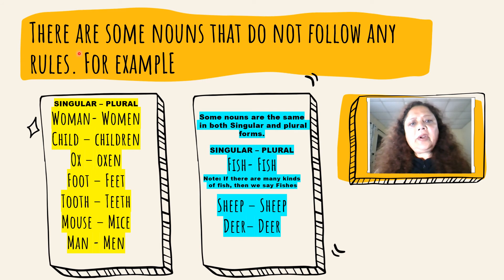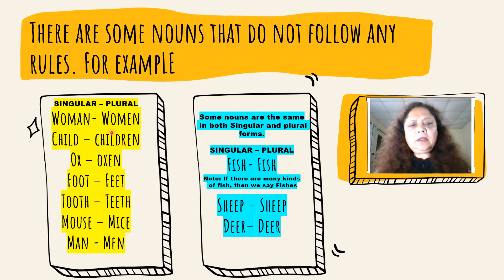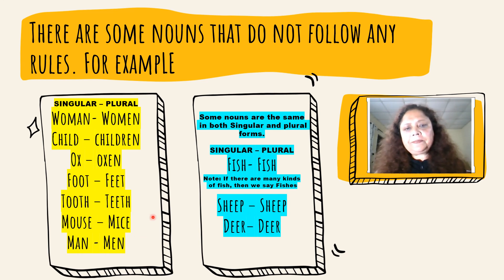There are some nouns that do not follow any rules. For example: woman, women; child, children; ox, oxen; foot, feet; tooth, teeth; mouse, mice; man, men. Some nouns are the same in both singular and plural forms.